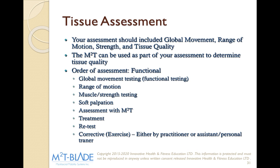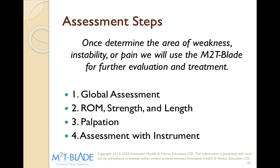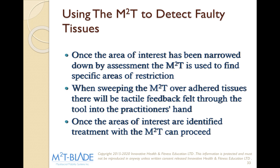Now let's talk about tissue assessment. Your assessment should include global movement, range of motion, and tissue quality. The M2T can be used as part of your assessment to determine tissue quality. We start with global movement, range of motion, muscle strength testing, soft tissue palpation, and assessment. Then we go into treatment. Once the area has been narrowed down by assessment, the M2T is used to find specific areas of restriction. We do a sweeping motion in multiple directions of the tissue. We hold the tool at a 45-degree angle and find those little bumps — those little 'rice crispies' underneath the skin. When going over adhered tissues, there'll be tactile feedback felt through the tool in the practitioner's hand. In some cases, if it's really chronic, you would also be able to hear it. Once areas of interest are identified, treatment can proceed.